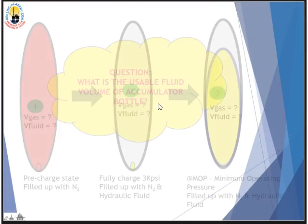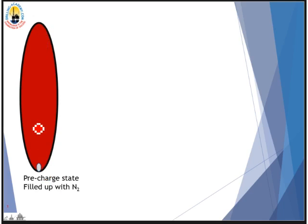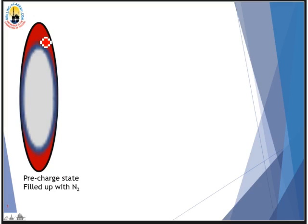The accumulator system has many bottles. In this example we just take one bottle — the calculation on one bottle — and then you multiply by the number of bottles to get the final value for the whole system. We have three states. The first state is called the pre-charge state: we fill up the bottle with nitrogen to the pre-charge pressure. The gray part represents nitrogen pumped into the bottle.